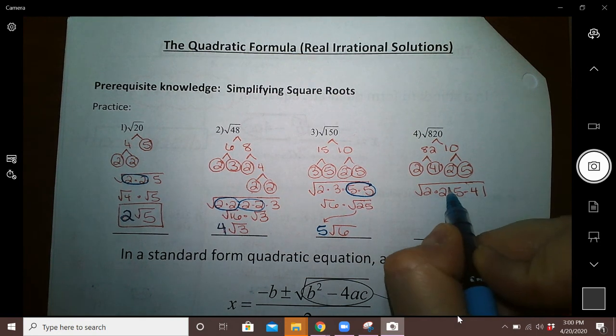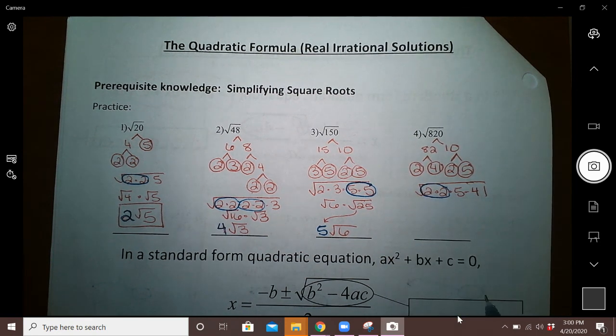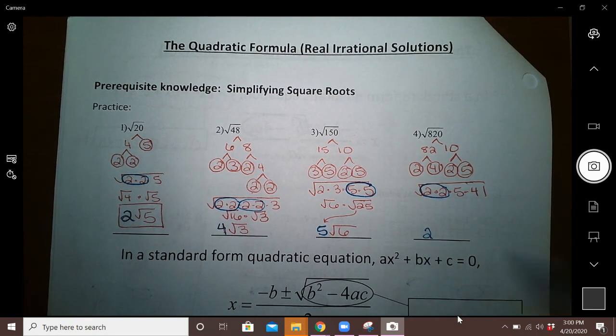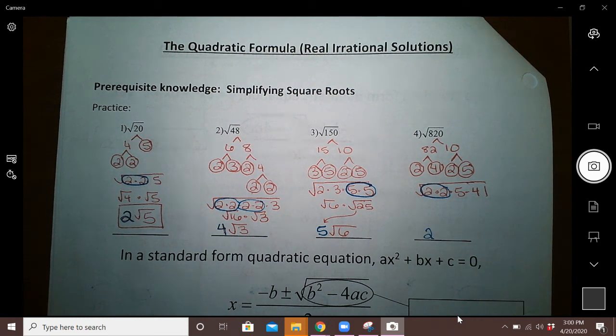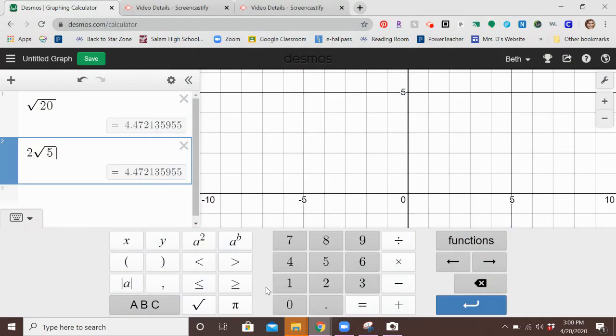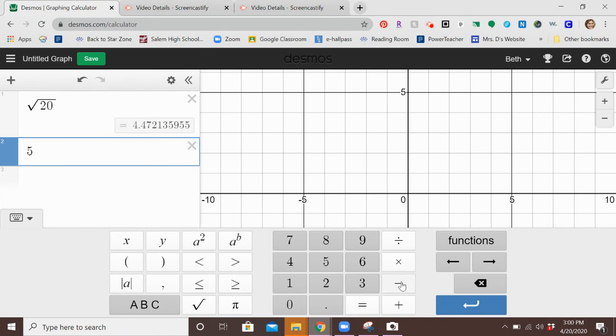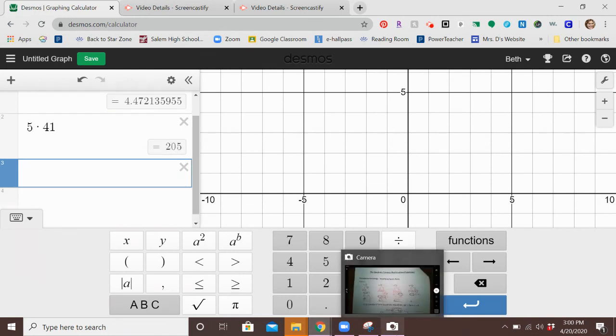So when I'm writing out the factors of 820, I've got 2 twos, 1 five, and a 41. Here's that partnership: 2 twos means the 2 is out front, and 5 times 41 is what stays under the radical. So 5 times 41 is 205. I believe—I'm going to make sure I get this right with decimals. 5 times 41, yes, 205.